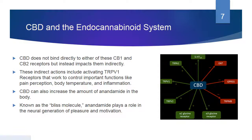CBD does not bind directly to the CB1 and CB2 receptors but instead impacts them indirectly. These indirect actions include activating TRPV1 receptors that work to control important functions like pain perception, body temperature, and inflammation. CBD can also increase the amount of anandamide in the body. Known as the bliss molecule, anandamide plays a role in the neural generation of pleasure and motivation. So you're going to have people who rely exclusively on CBD oils or additives, and then people who, because of pain or pressure or anxiety, really do need that THC. It's about levels of pain and understanding one's own pain.